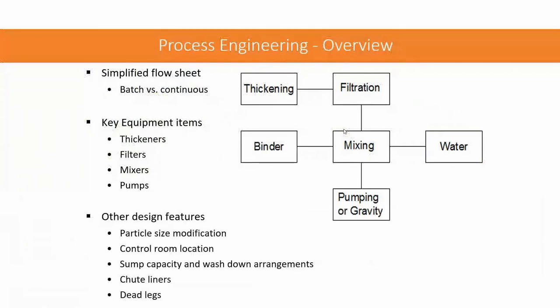Looking at the process engineering overview — this is a very high-level view of a paste plant. You can see that we get the tailings stream, thicken that material, and then it undergoes filtration by either vacuum filtration or pressure filtration. It is then mixed with water and binder and then delivered underground via pipes. This can be either gravity-driven because there's a lot of head energy, or pumped. There's a lot to go into in process engineering, but with limited time I will be moving on.